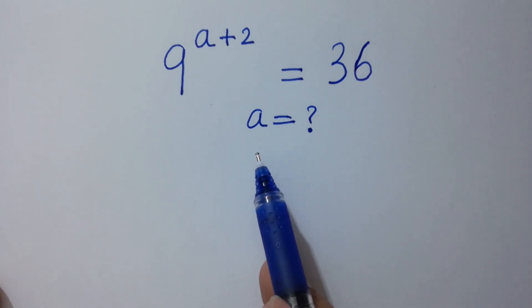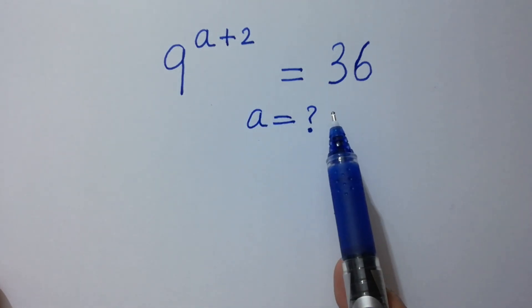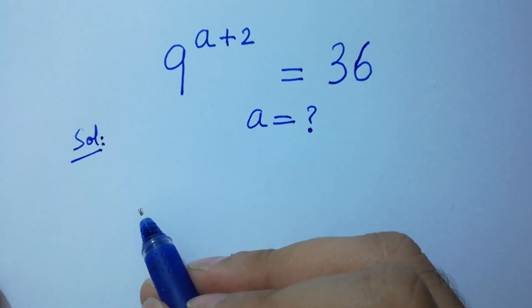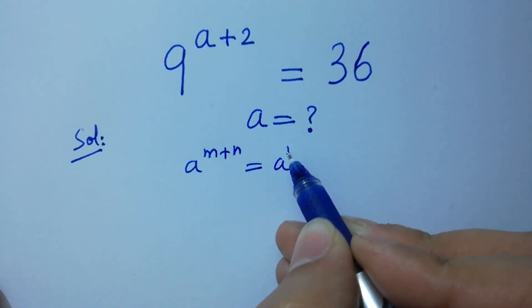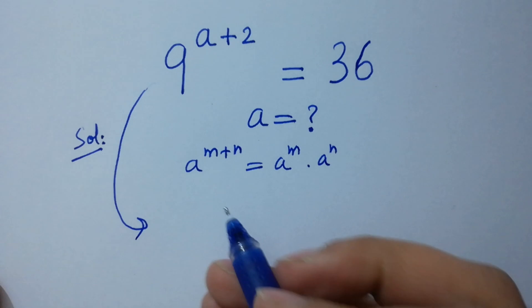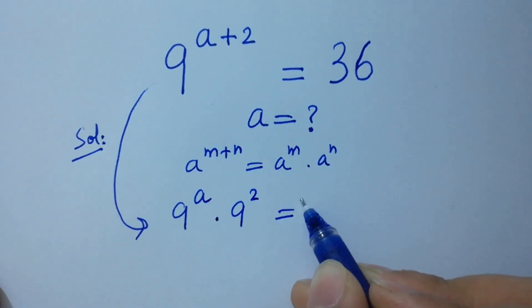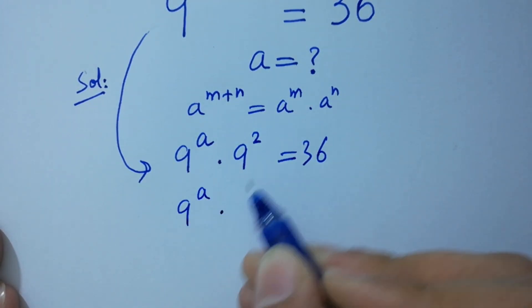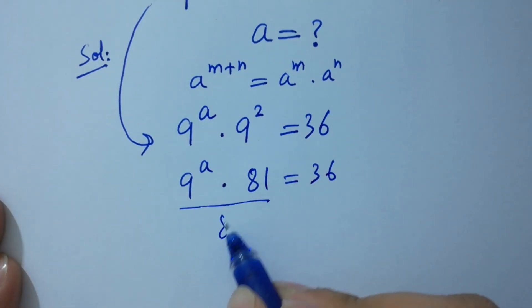Hello friends, find the value of a if 9 to the power a plus 2 equals 36. As we know, a to the power m plus n equals a to the power m times a to the power n. So it will be 9 to the power a times 9 to the power 2 equals 36.